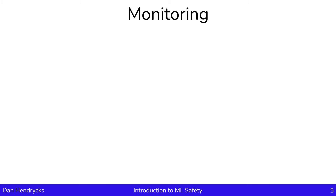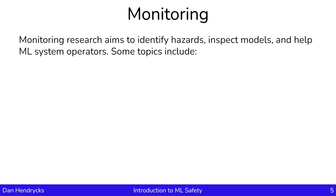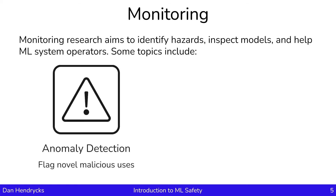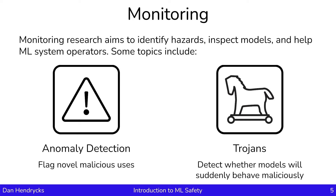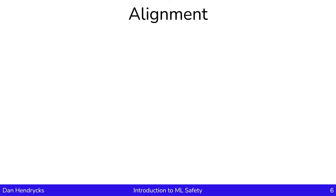Another research area in ML safety is monitoring. Monitoring is about identifying hazards, inspecting models, and helping ML system operators. Some example topics in the area include anomaly detection — a goal of anomaly detection is to help flag novel malicious uses. Another area in monitoring is Trojans. A goal of Trojans is how can we detect whether models will suddenly behave maliciously?